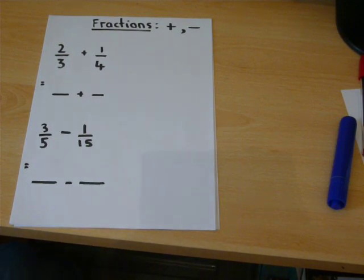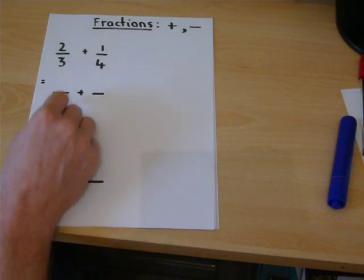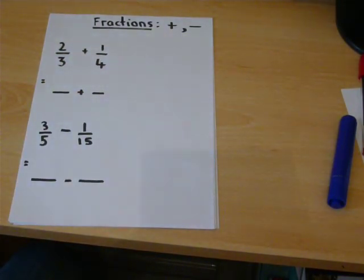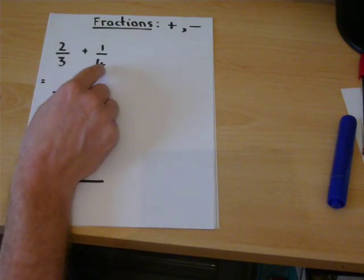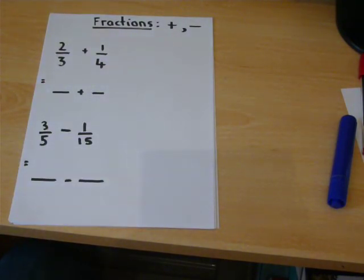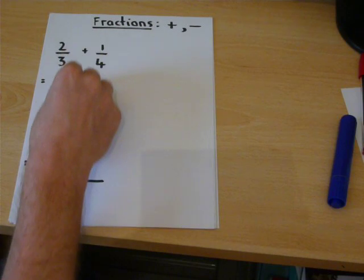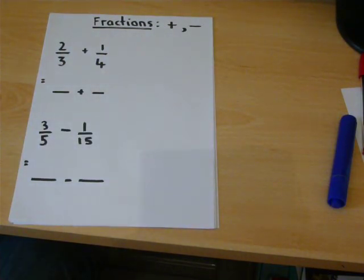When we add fractions, we want to have the same number on the bottom. In this case, we have a 3 and a 4. These must be converted to have the same denominator.